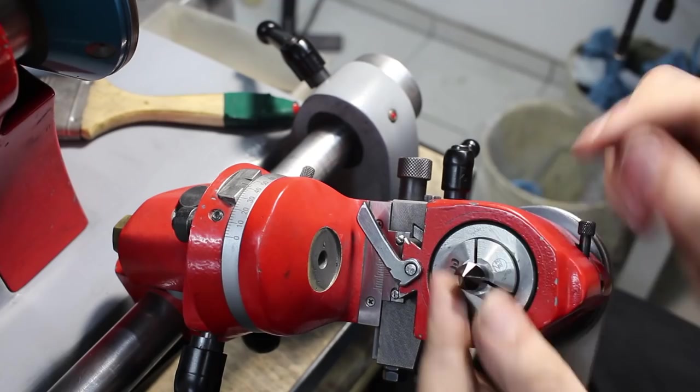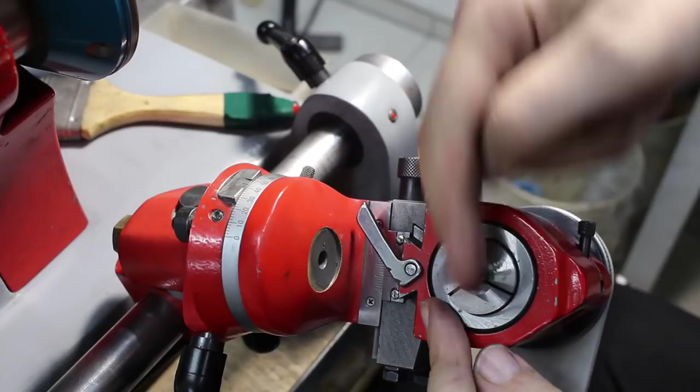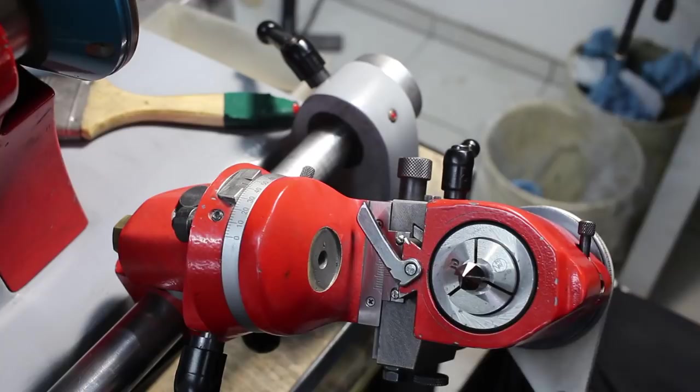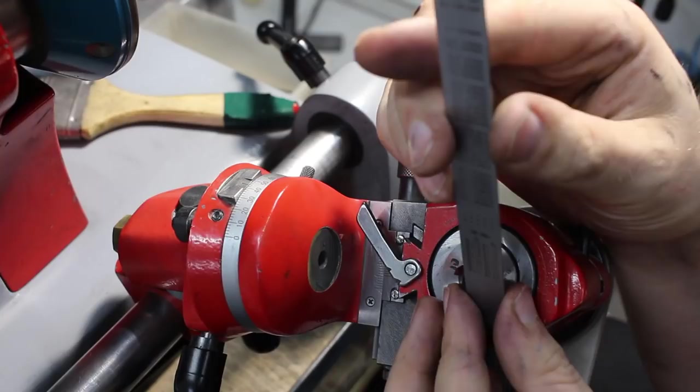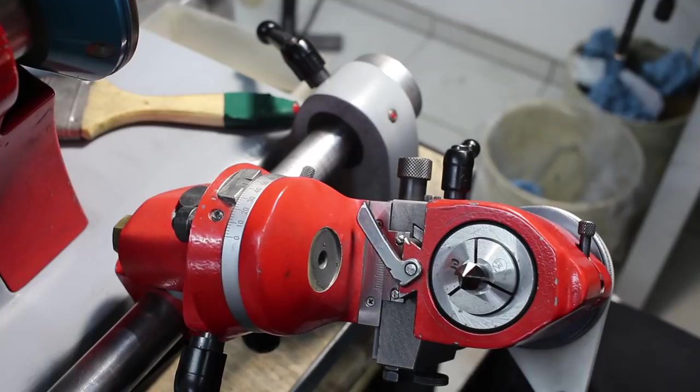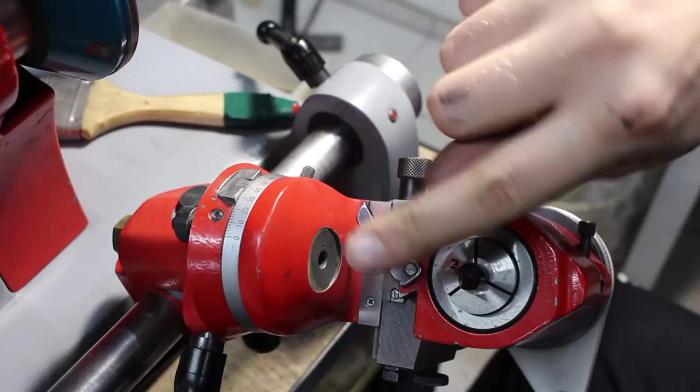Now it's a matter of aligning the cutter so the flutes are horizontal and square to the spindle of the dividing head. When I did this with the twist drills I used the square and a scale over the cutting edge and I eyeballed it, but I found a slightly better way. It's still not perfect but I'm working on it.